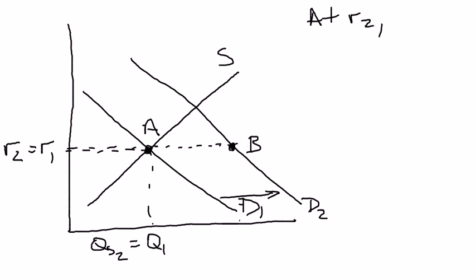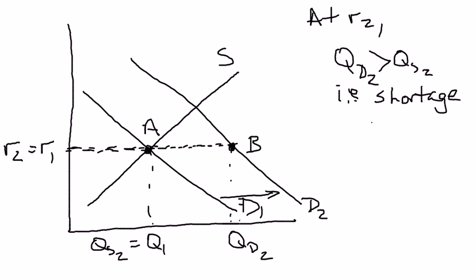And we'll put that right there. Now to find quantity demand, we're going to go from real interest rate 2 all the way over to the new demand curve, because that's the one that's relevant, and down. And we'll call that quantity demand 2. And we're going to find that quantity demand 2 is greater than quantity supplied 2, i.e. shortage exists. That means there's some firm out there that would like to borrow, but can't because it can't find a bank or someone willing to loan to them at the current interest rate of R2.